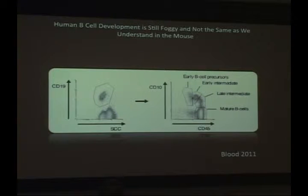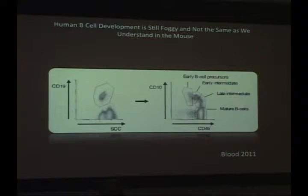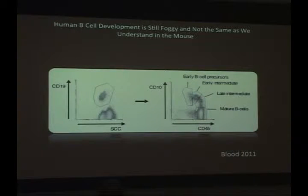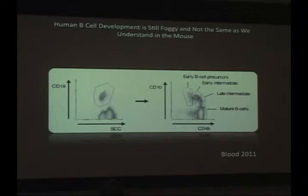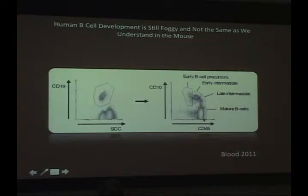Human B-cell development for the non-immunologists in the room is not really well understood from a human perspective. A lot of what we know comes from mouse models because mice are easy to manipulate. Early progenitor B-cells in the human bone marrow are exceedingly rare — rarer than stem cells, actually, in some of the fractions we identified. This is a Blood paper from two years ago looking at early B-cell development in the human, where their upstream gate started with CD19-positive cells, and using a 45-by-10 gate, they called out a couple different stages.